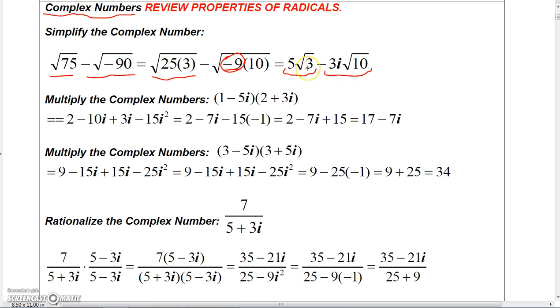So here, the real number is 5√3, and the i of course has a coefficient of -3√10. Now let's talk about multiplying complex numbers.